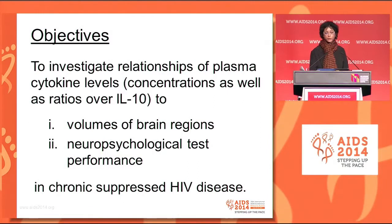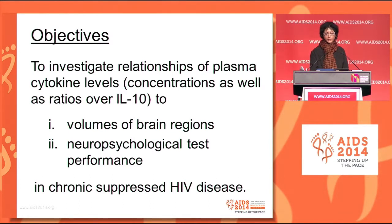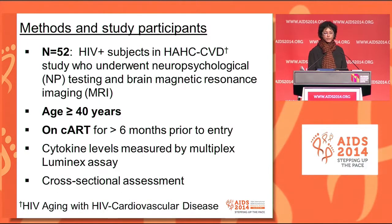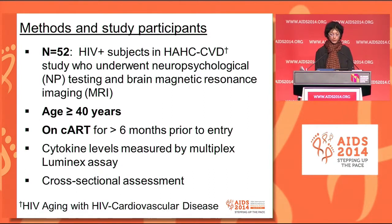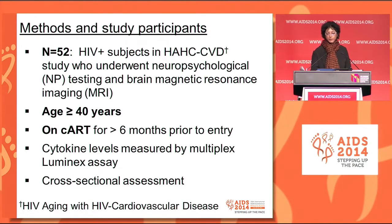The objectives of our study were to investigate the relationships of plasma cytokine levels to volumes of brain regions and to neuropsychological test performance in chronic suppressed HIV disease. We looked at concentrations of cytokines as well as ratios over IL-10. We had 52 HIV-positive subjects who underwent neuropsychological testing and brain MRI. They were over 40 years of age, on CART for at least 6 months. Cytokine levels were measured by multiplexing, and this was a cross-sectional assessment.